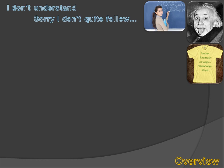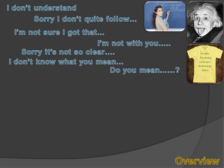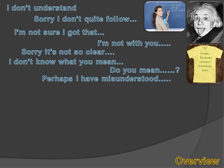I don't understand. I don't quite follow. I'm not sure I got that. I'm not with you. English has a million ways to say the same thing — it's so difficult. And I've heard people say math is difficult. Well, I've got to admit, in math there's usually more than one way to say the same thing, and we're going to talk about that today. We're going to talk about expressing relationships between X and Y in several different ways.